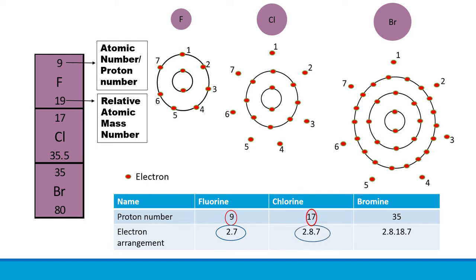Likewise, bromine, having proton number 35, has electron arrangement 2.8.18.7. This is the reason these elements are placed in Group 17 and they share similar physical and chemical properties.